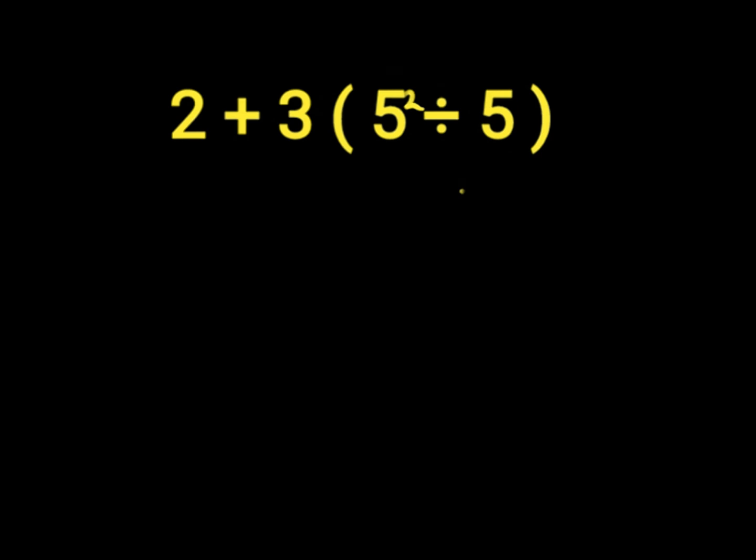We first solve our parentheses which is 5 to the power of 2 divided by 5. 5 to the power of 2 will give us 25 which is got from 5 times 5. Then we divide by 5.